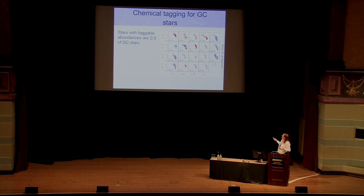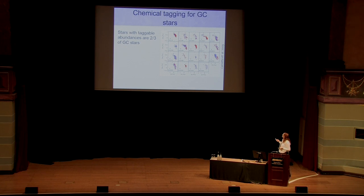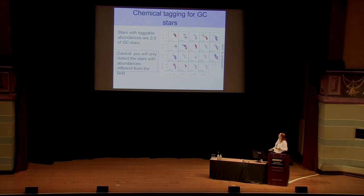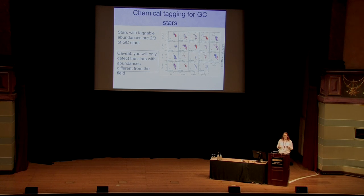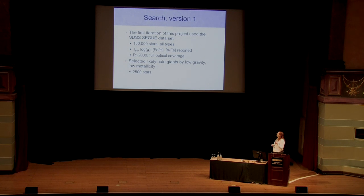This pattern appears in all clusters studied. A VLT survey of 19 different clusters in the southern sky shows that in all of them there is some amount of this O-Na anticorrelation, making it a reliable chemical tag for globular cluster origin. The caveat is that the one-third of cluster stars with ordinary light element abundances are chemically invisible once they enter the field — you're only detecting the chemically taggable stars that are distinct from the field.